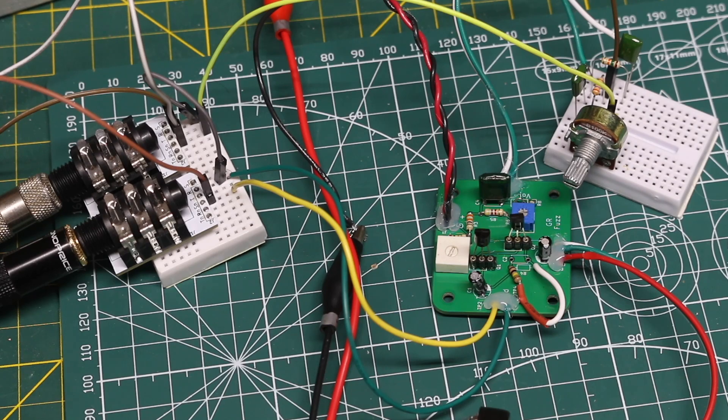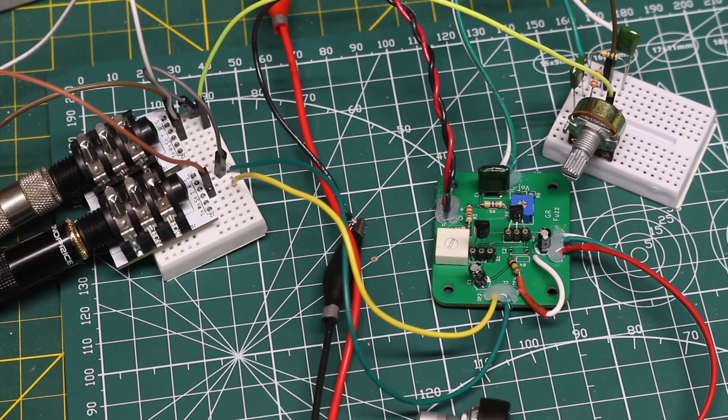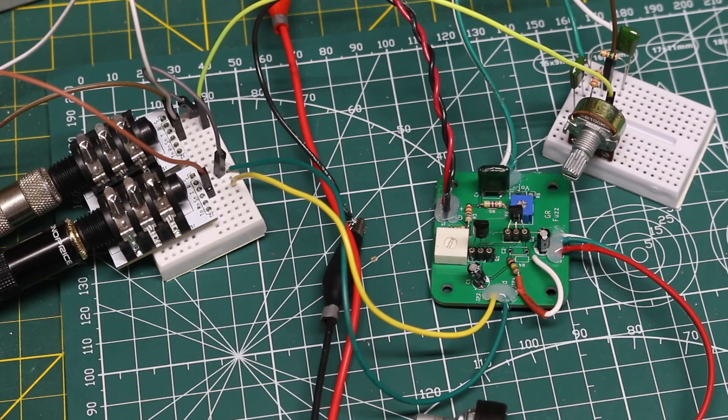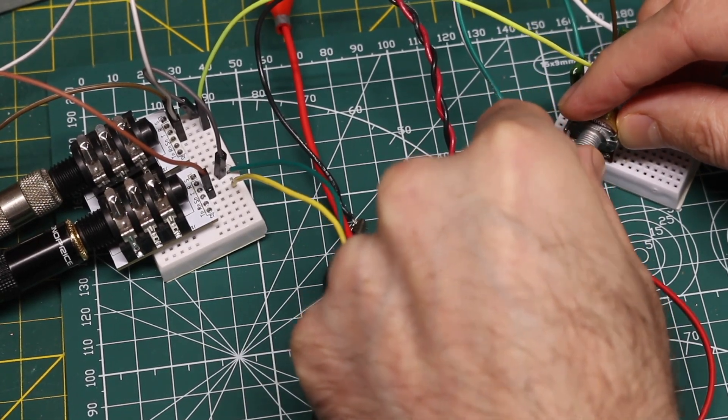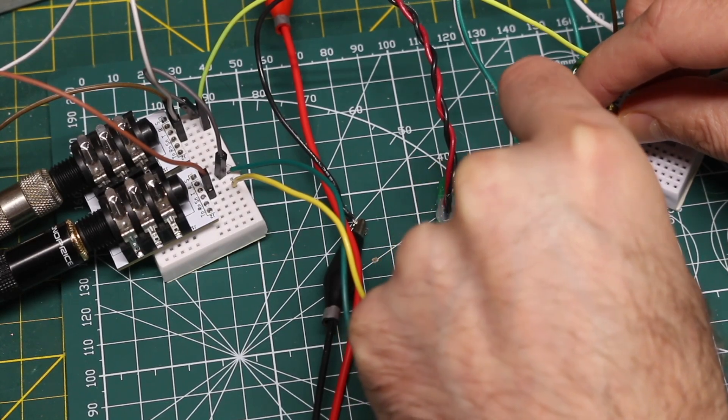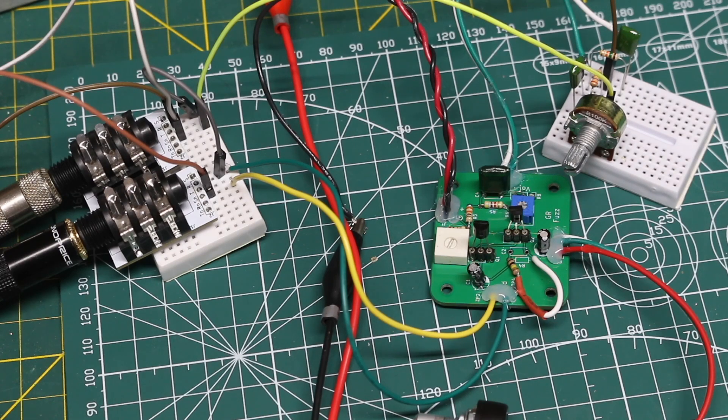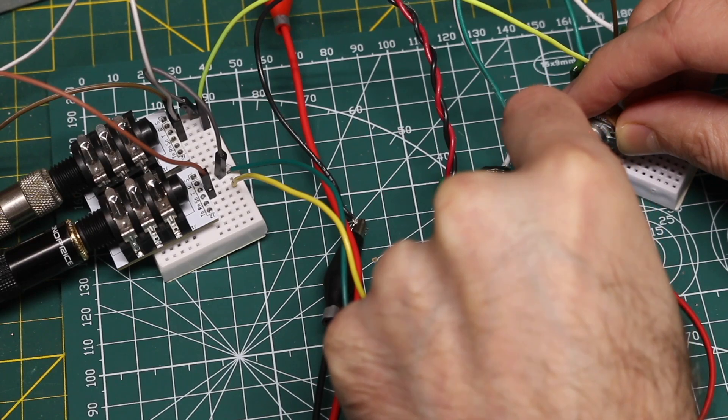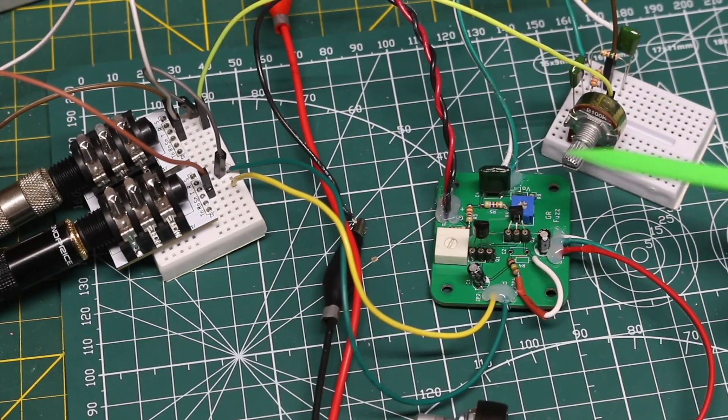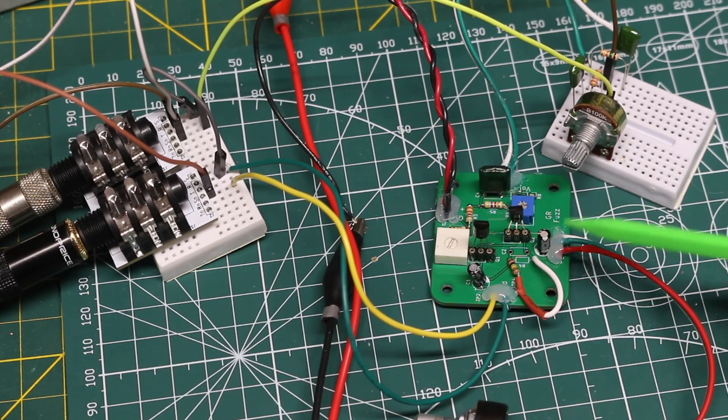Here's what it sounds like going through this fuzz. So I'll hit some more strings, and I'll adjust the tone control so we can hear the difference as we go from bass to treble. So it's definitely functioning as a tone control, and hopefully when we put it in an enclosure, it will be less noisy.